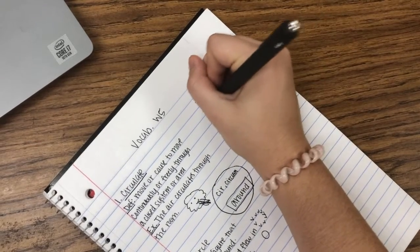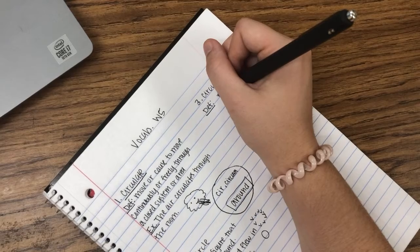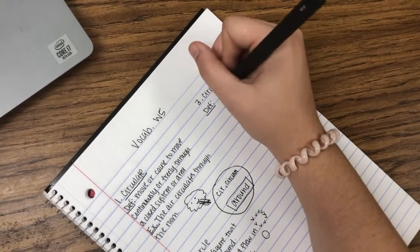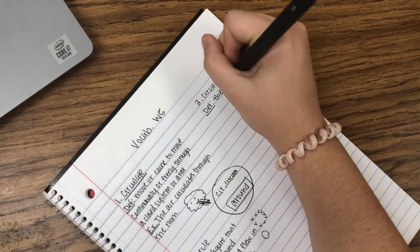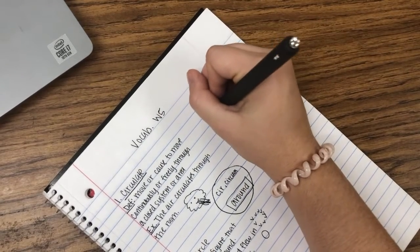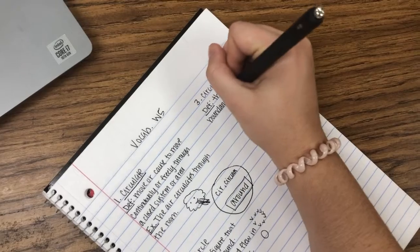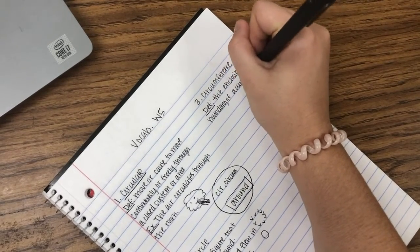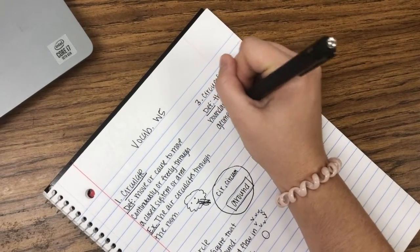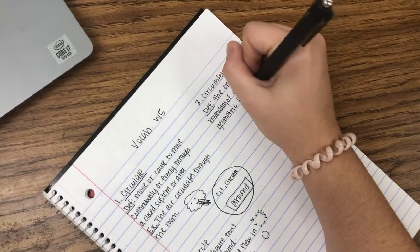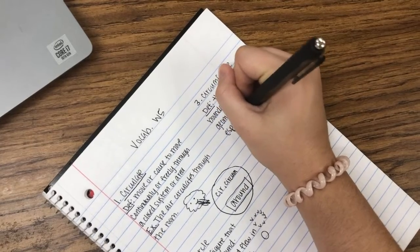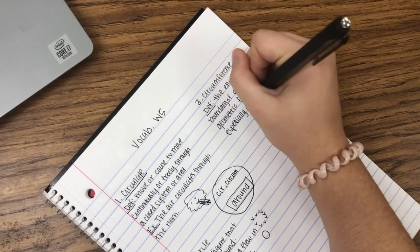The definition of circumference is the enclosing boundary of a curved or geometric figure, especially a circle.